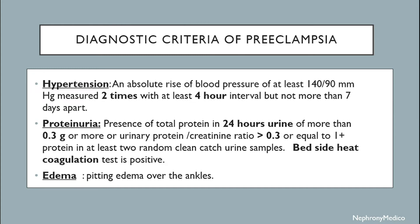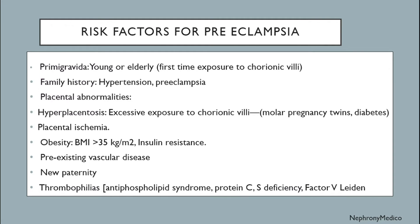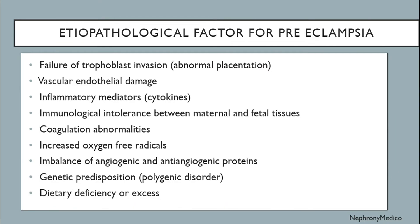Risk factors for preeclampsia: primigravida, young or elderly age, family history of hypertension or preeclampsia, placental abnormalities, hyperplacentosis, placental ischemia, obesity, pre-existing vascular disease, new paternity, and thrombophilias. The actual pathological factors include failure of trophoblast invasion due to abnormal placentation, vascular endothelial damage, inflammatory mediators, immunological intolerance between maternal and fetal tissues, and coagulation abnormalities.